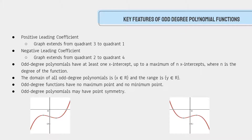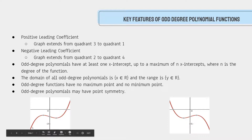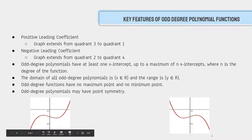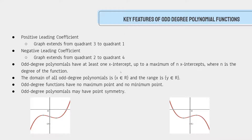Key features of odd-degree polynomial functions. For an odd-degree polynomial function with a positive leading coefficient, it starts from quadrant 3 and goes up to quadrant 1. With a negative leading coefficient, it gets flipped — going from quadrant 2 to quadrant 4. Odd-degree polynomials have at least one x-intercept, up to a maximum of n x-intercepts, where n is the degree of the function.